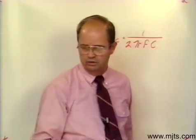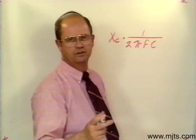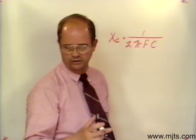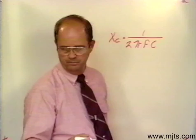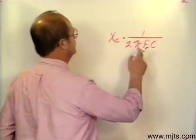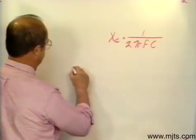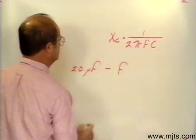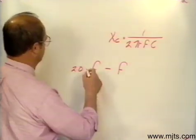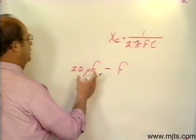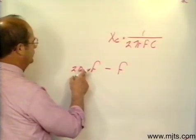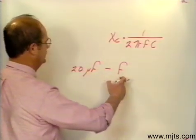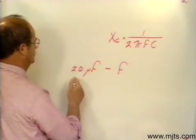In assignment sheet three, number one, you have a problem where you're to find the capacitive reactance. You're given 20 microfarads and 60 cycles. Now, we have to change this 20 microfarads to farads. In our prefixes, you learn that from micro to the whole unit we're going two places to the right, which means we have to go six decimal places to the left.